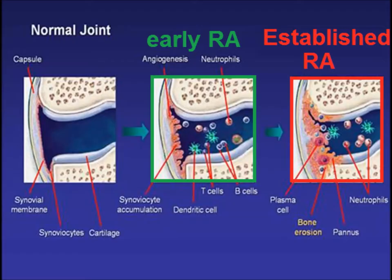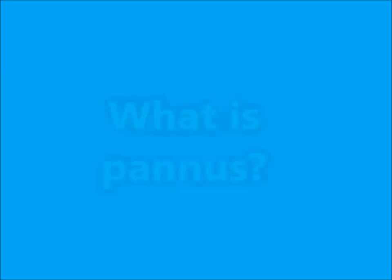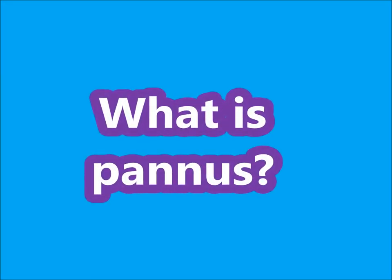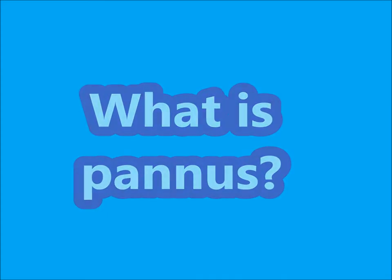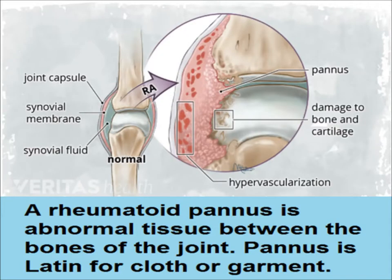A normal synovial joint is lined by articular cartilage and a thin membrane called the synovial membrane. When there is inflammation, this synovial membrane becomes thickened and is infiltrated by inflammatory cells. There is also blood capillary proliferation which leads to destruction. This abnormal tissue is called pannus in rheumatoid arthritis.